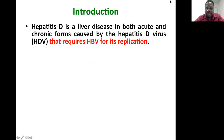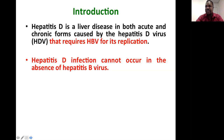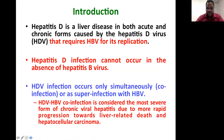Hepatitis D is a liver disease that can be both acute and chronic, and it is caused by hepatitis D virus. This virus requires hepatitis B for its replication — hepatitis D infection cannot occur in the absence of hepatitis B virus. So although we don't have a licensed vaccine against hepatitis D, if you take preventive measures against hepatitis B, you also prevent the occurrence of hepatitis D.